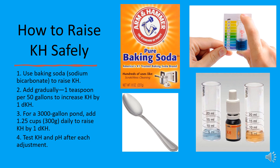For a 3,000-gallon pond, that means adding 1.25 cups, or 300 grams, daily to increase KH by 1 dKH. Always test your KH and pH levels after each adjustment.